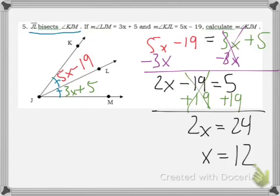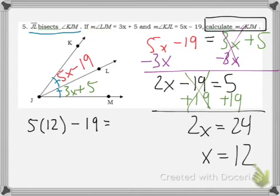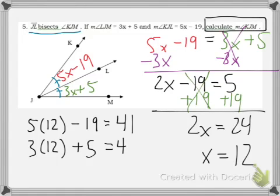Are we done? Nope. Because the problem had asked us to calculate the measure of angle KJM. So, I need to plug in the 12 to figure out what the measures of those angles are. If I plug 12 into the first angle, 5 times 12 is 60 minus 19 gives us 41. We can check it by plugging into the other one. 3 times 12 is 36 plus 5 is also 41. This verifies that we solved the algebra correctly because these two should be equal to each other because the angles are congruent.